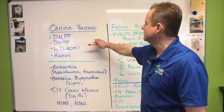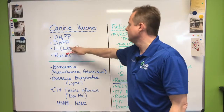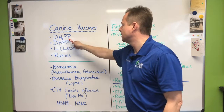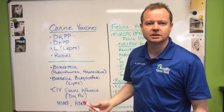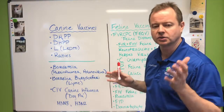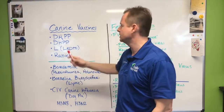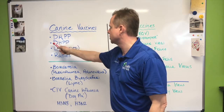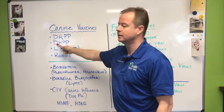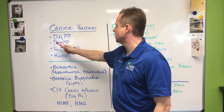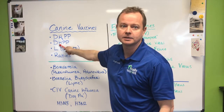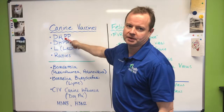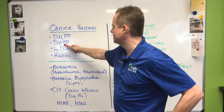For the dog, there's the DHLP, DHPP, or DA2PP. You may see those letters interchangeably — they are actually the exact same vaccine, named for the viruses it covers. You have distemper virus, which causes the disease distemper. You have adenovirus, which causes hepatitis. And then you have parainfluenza virus, which causes parainfluenza.